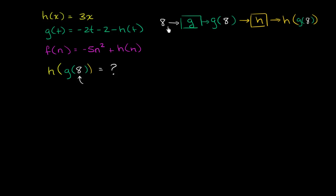So let's just do it one step at a time. Let's figure out what g of 8 is. I'm going to color code it so we can keep track of things. g of 8 equals, well, g of t is our definition here. So our input now, instead of a t, 8 is going to be our t. So every place where we see a t in this function definition, we replace it with an 8. So it's going to be negative 2 times 8 minus 2 minus h of 8.